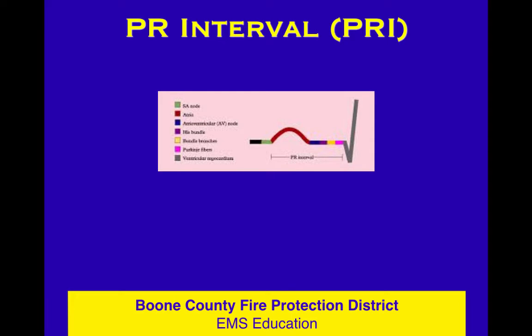As covered in a previous lesson, the impulse originates in the SA node and then moves into the atria — that's what makes the P wave when the atria depolarize electrically, causing them to contract mechanically. Then the AV node holds the impulse briefly before it goes into the HIS bundle and the bundle branches, and finally down to the Purkinje fibers. That's when the ventricles become depolarized as the impulse reaches the end of the Purkinje fibers. That's what we're looking at with P waves and QRS complexes and particularly the PR interval.